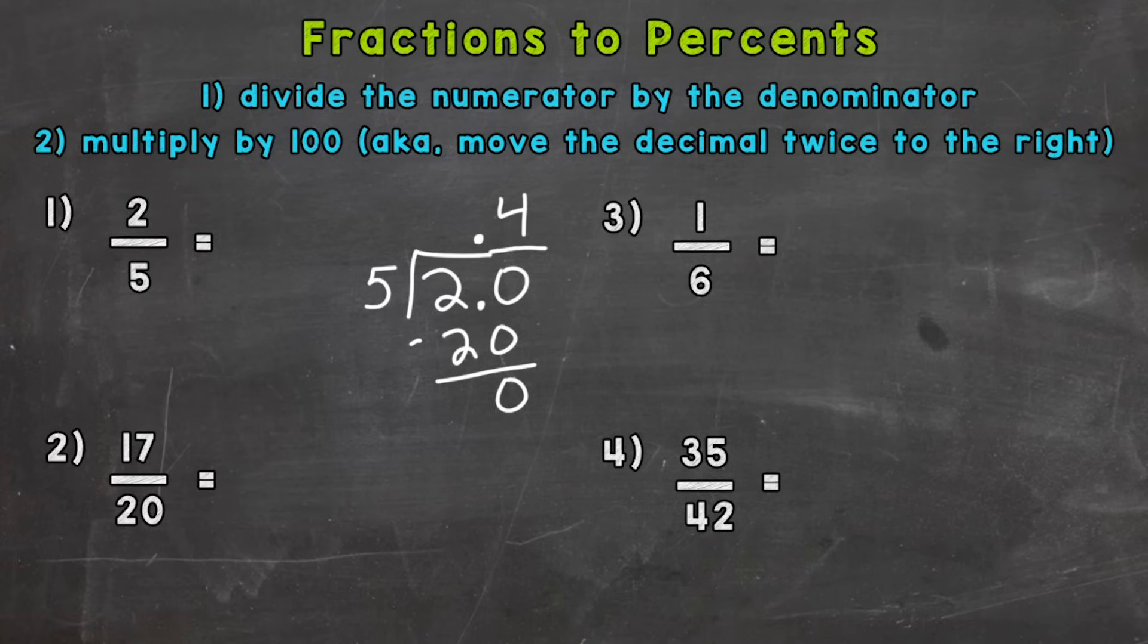So I'm going to rewrite 0.4 down here and move the decimal twice to the right: 1, 2, fill with a zero here, and we get an answer of 40, which in percent form is 40 percent. So 2/5 equals 40 percent.